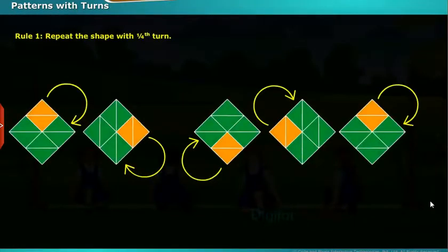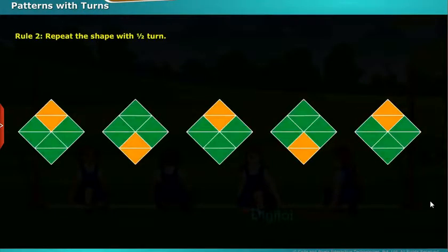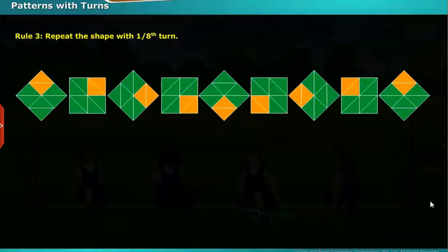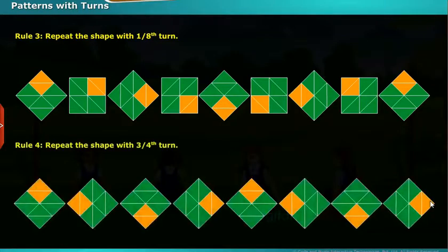Now look at the square. We make three different rules to turn it clockwise. Rule 1: Repeat the shape of square with one fourth turn to make a pattern. Rule 2: Repeat the shape of square with a half turn to make a pattern. Rule 3: Repeat the shape of square with one by eighth turn to make a pattern. Rule 4: Repeat the shape of square with three by fourth turn to make one more pattern.